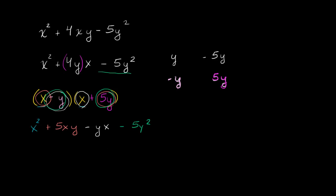Now we simplify by combining the middle two terms. This is 5yx - yx. I have 5 yx's and subtract one yx, leaving 4yx's. So this is x² + 4yx - 5y², and it all works out.